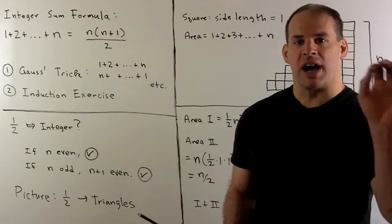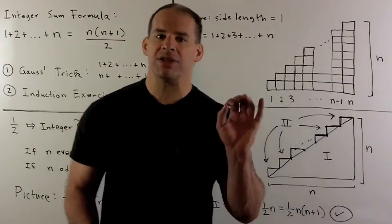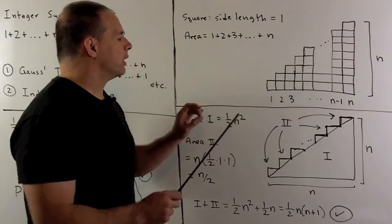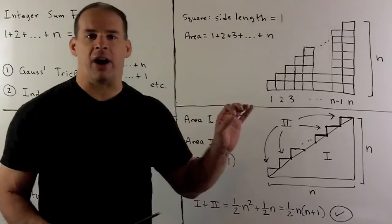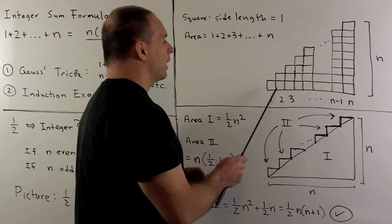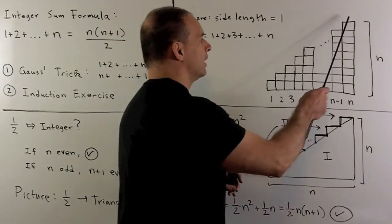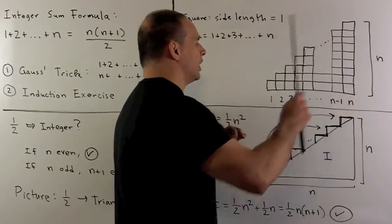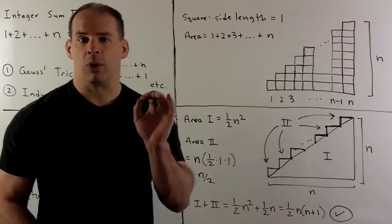Another way to reconcile that 1 half is to put a picture to everything. I'm going to draw the sum by stacking squares, where each square has side length 1. We have 1 square here, two squares to give a 2, three squares to give a 3, and so on, until we get a stack of n squares giving us area n. So the area of this region is 1 plus 2 plus 3 all the way up through n — the sum we're interested in.